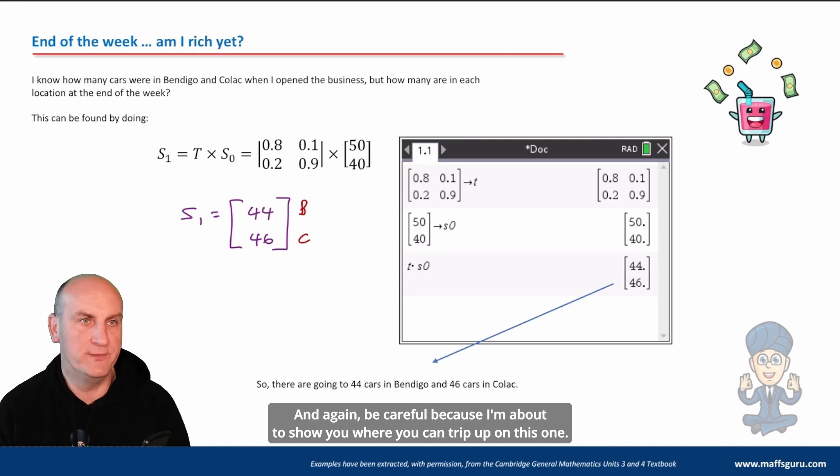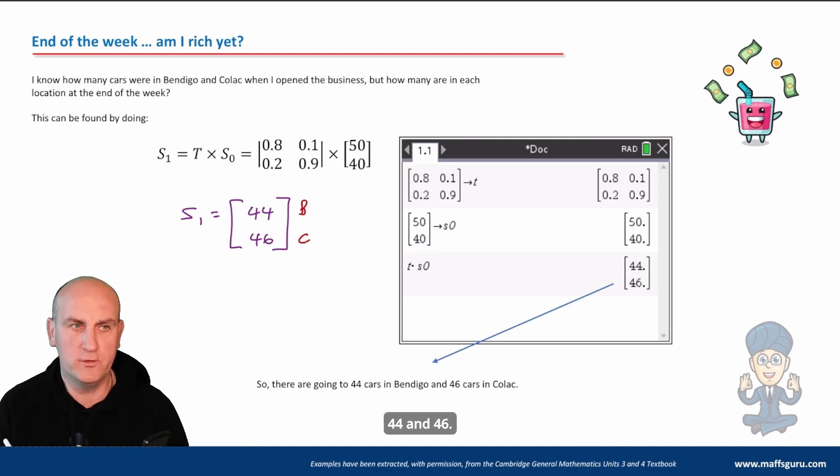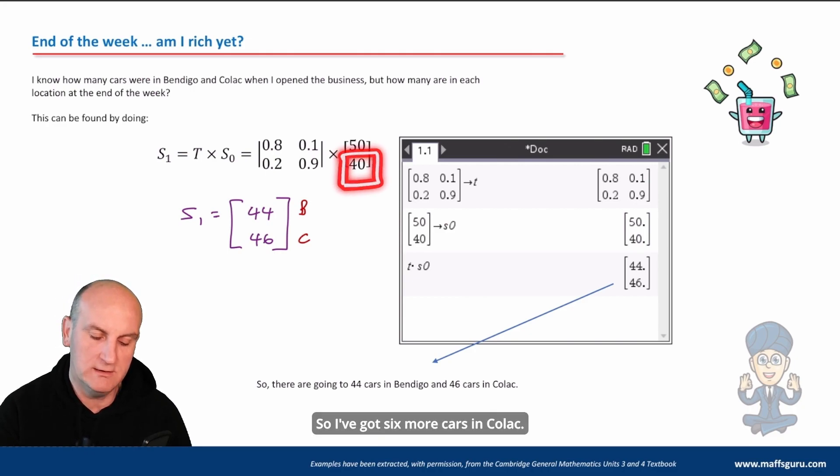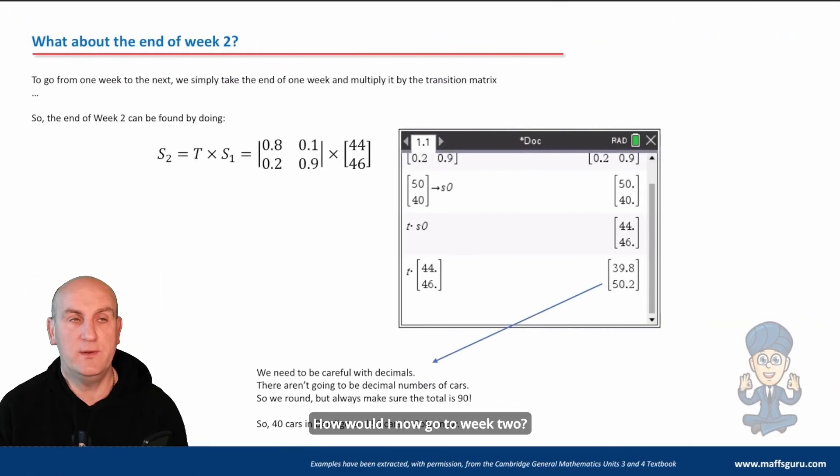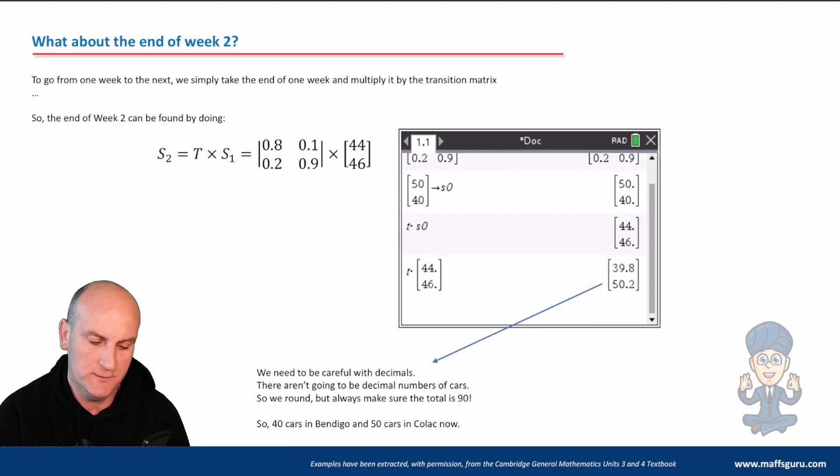About 44 and 46. Yes, oh interesting. So I've got six more cars in Colac, and six less cars in Bendigo. Well, that's okay, I'm sure we're fine. But that's my week one. How would I now go to week two? Well, pretty much like we did in financial maths, we take the matrix that we now have. So in this situation, if I want to get to S₂, I do my transition matrix times S₁.